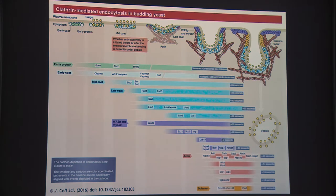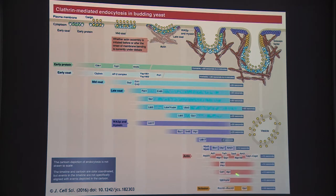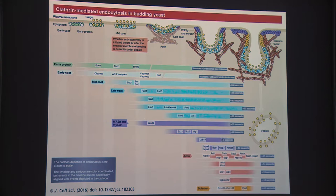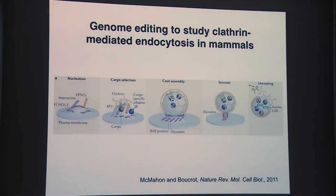Key to this work was the fact that in yeast we could precisely integrate GFP and RFP into the genome because homologous recombination is very robust there. We could look at the dynamics of each protein expressed at its native level, without having to overexpress a cDNA fusion on top of endogenous proteins—which was commonly done in mammalian cells.